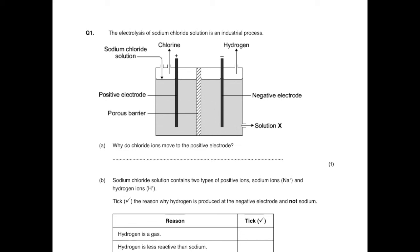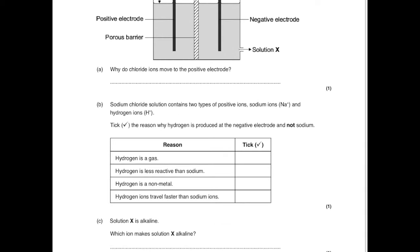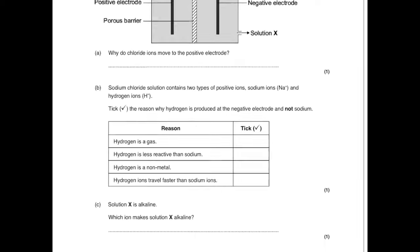The electrolysis of sodium chloride solution is an industrial process. Why do chloride ions move to the positive electrode? Because they are oppositely charged and therefore they're attracted. Sodium chloride solution contains two types of positive ions: sodium ions and hydrogen ions. Tick the reason why hydrogen is produced at the negative electrode and not sodium. The correct answer is: hydrogen is less reactive than sodium. The other options — hydrogen is a gas, hydrogen is a non-metal, and hydrogen ions travel faster than sodium ions — are not correct reasons.